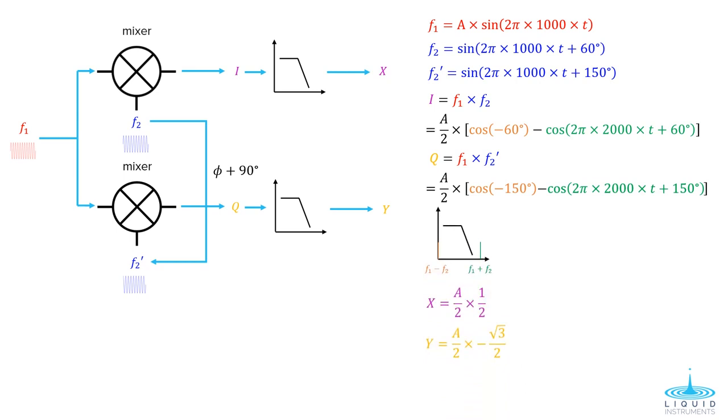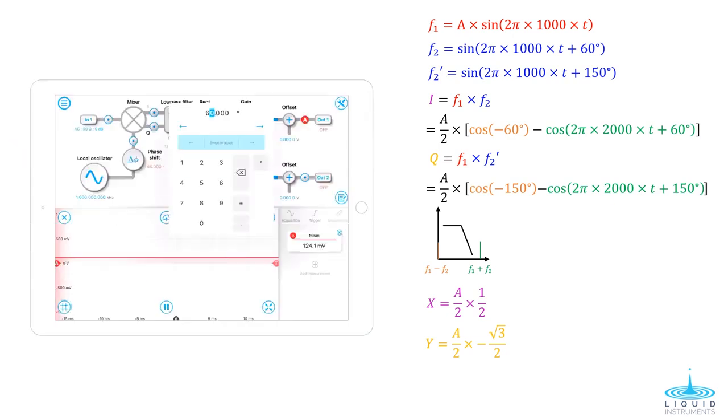We multiply them with the mixers and filter out the high-frequency components. Now, we get our X and Y at half and minus root 3 over 2. This agrees well with the experimental results from Moku Lab.